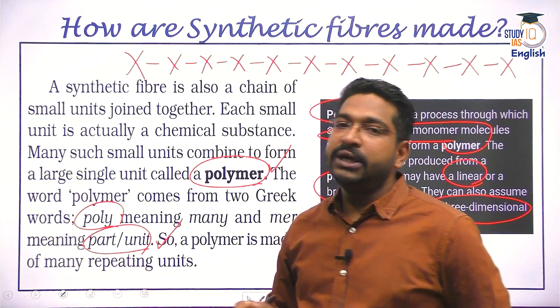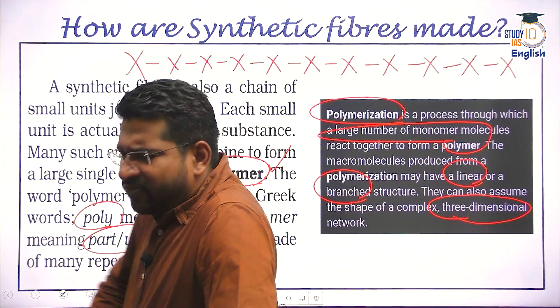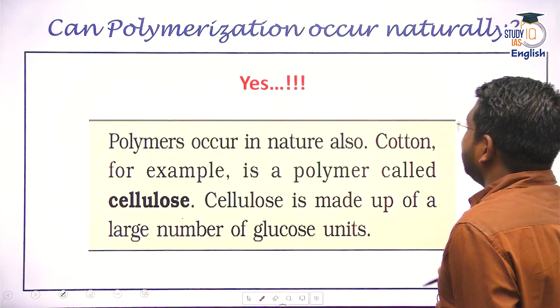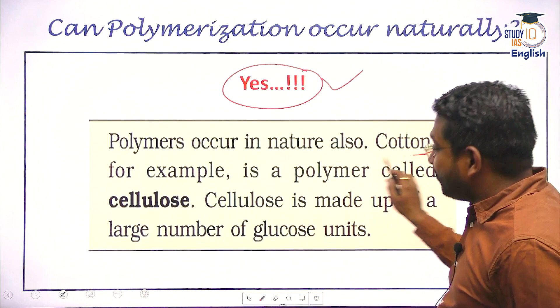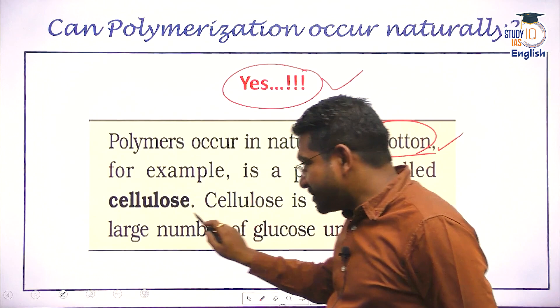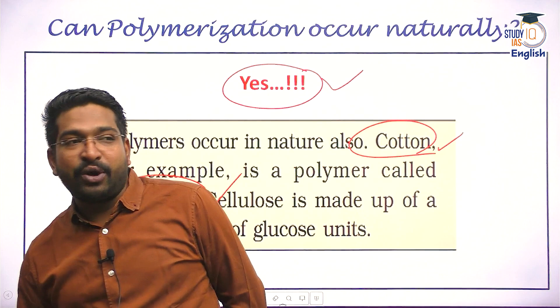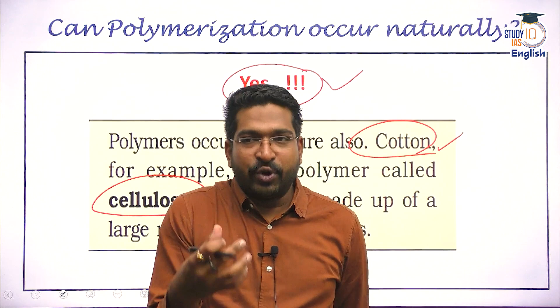Do polymers occur in nature? Yes, they can. Cotton is a classic example — cotton is made up of cellulose, and cellulose itself is a polymer where the basic monomer or basic unit is the glucose unit. So if anybody asks you whether polymers can only be created through a chemical process — they are created through a chemical process, but they can occur even naturally. Please remember that.